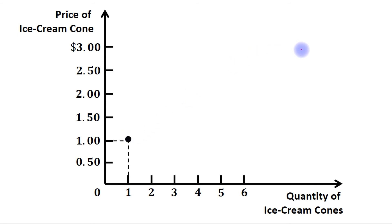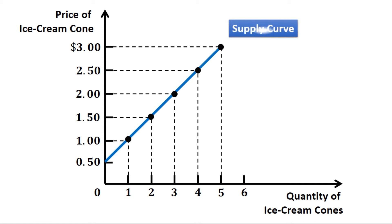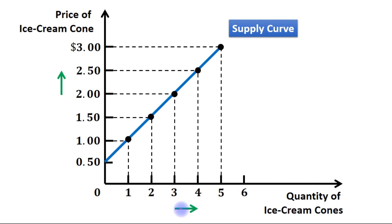We can plot other combinations as well, and now we will join these points to form our supply curve. Notice that this supply curve slopes upward, showing a positive relationship between price of a good and quantity supplied. This supply curve starts from this point because at a price of $0.50, quantity supplied is 0. As the price increases, quantity supplied also increases.